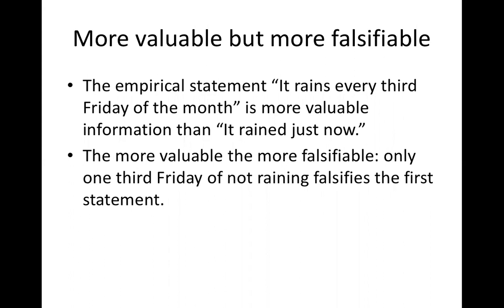The empirical statement 'it rains every third Friday of the month' is more valuable information than 'it rained just now.' The value of information is calculated by finding out what you can use it to do. If you are a farmer and you hear that it rained just now, you can decide to go to the farm tomorrow because the soil will be soft. But if you hear that it rains every third Friday of the month, that is more valuable because you can go every third Saturday to till the farm since the soil will be soft. But the more valuable, the more falsifiable — it will take only one third Friday of no rain to falsify the first statement.